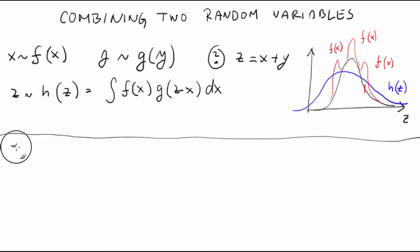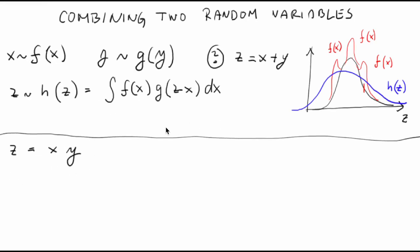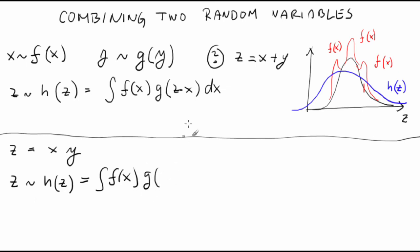Similarly, we might be interested in a PDF for the product of x and y. The probability density function of the product z = x · y is just another type of convolution: h(z) equals the integral of f(x) times g(z/x) dx divided by the absolute value of x.